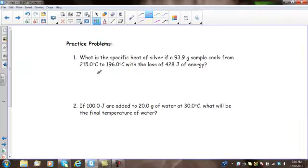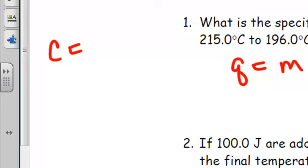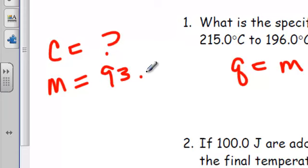Next problem. So, Q equals M C delta T. I'm going to write down what I have. I don't know what C is. It's saying what is the specific heat. I have a 93.9 gram sample. So, that's my mass, 93.9 grams. Cools from 215 degrees Celsius to 196. So, delta T is going to be equal to 215 minus 196, which is going to give me 19 degrees Celsius.